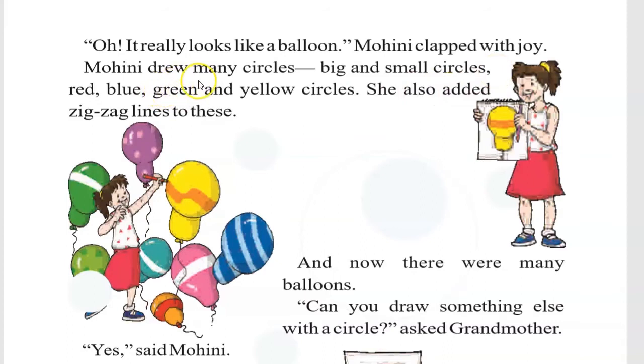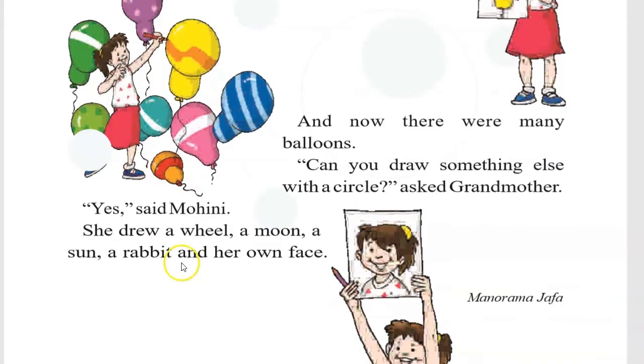Now Mohini drew many circles, big and small circles, some red color, some blue, green and yellow circles. She also added zigzag lines and now there were many balloons. Can you draw something else with the circle beyond the balloons, asked Grandmother.